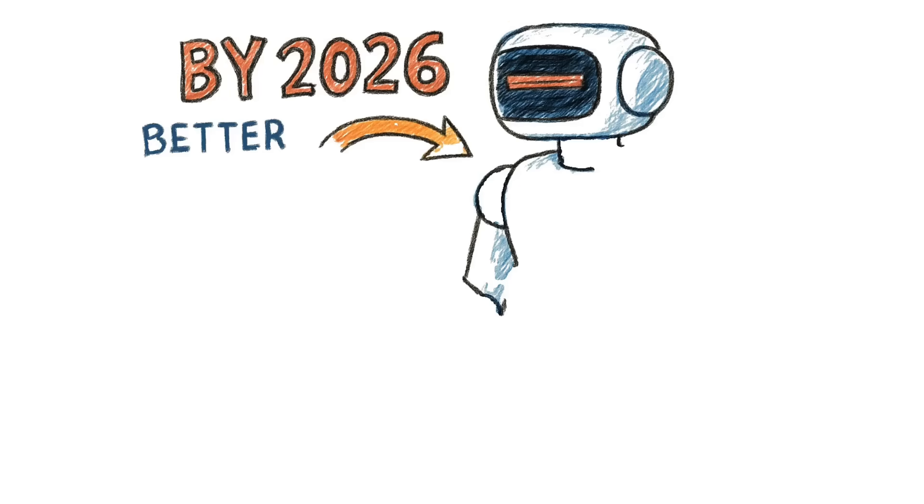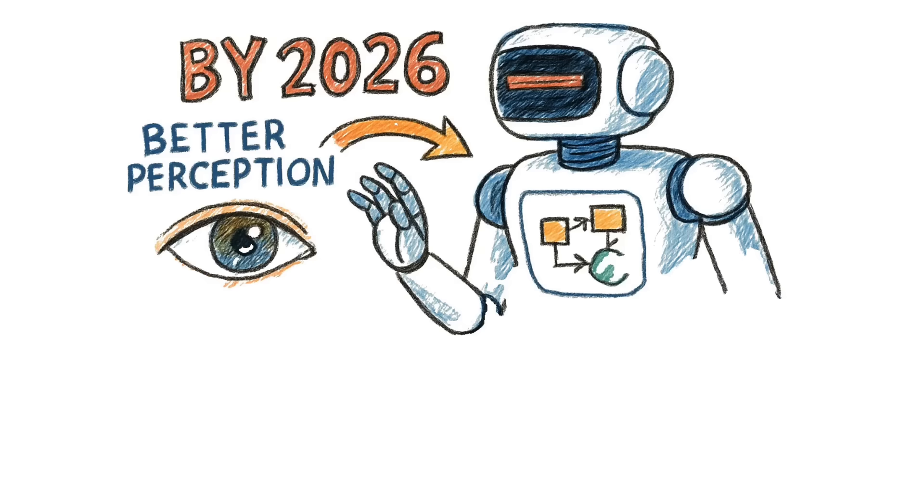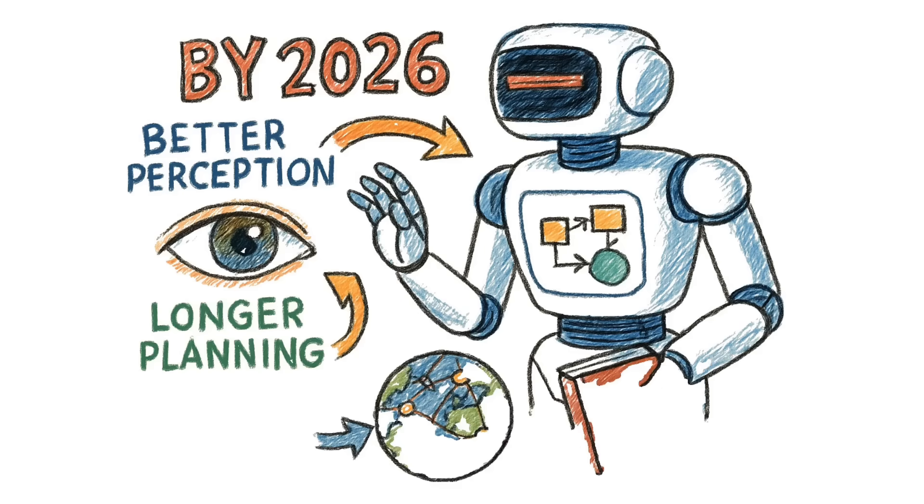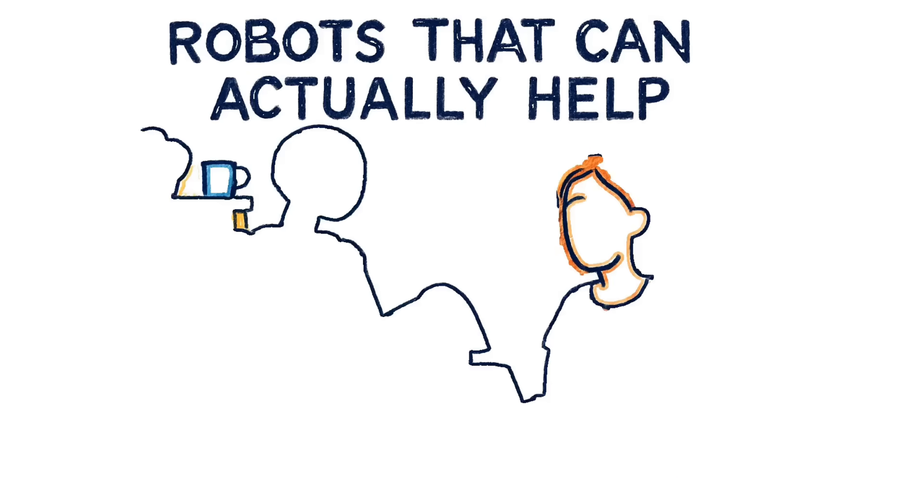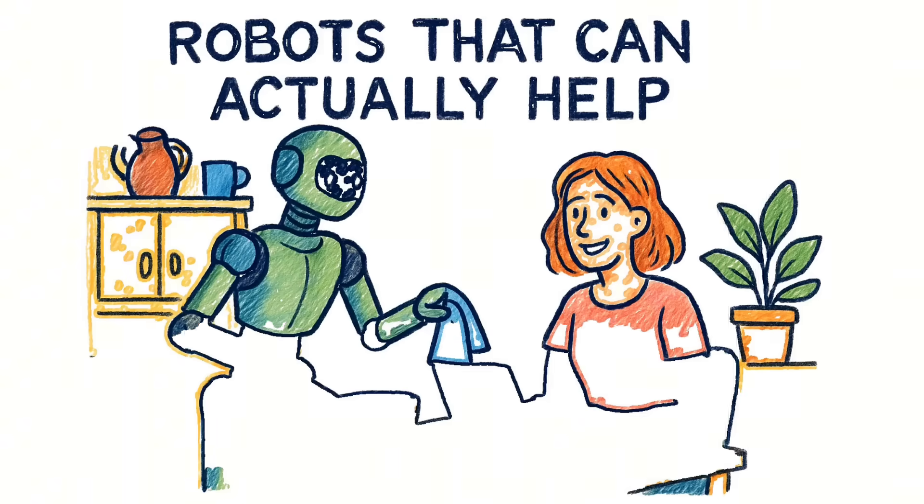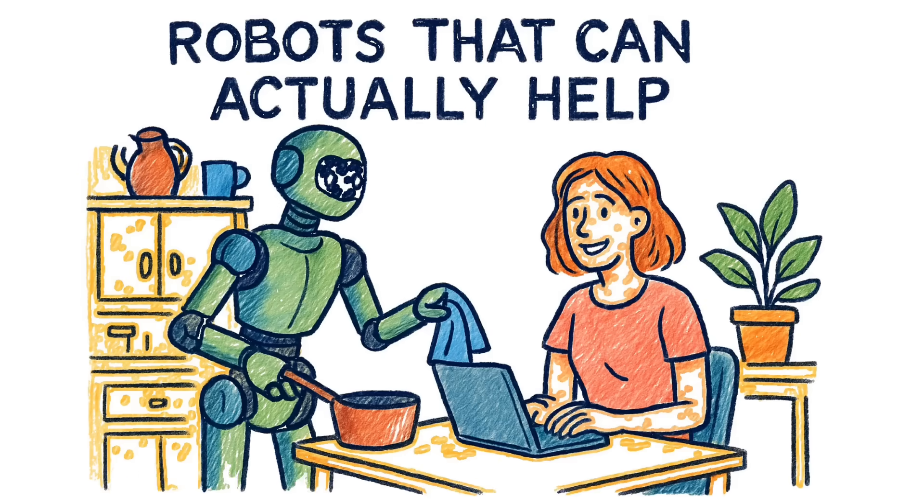And by 2026, Hassabis says these robots will have better perception, longer planning horizons, and tighter links to world models. Translation? Robots that can actually help in your home or workplace, not just demo in a lab.